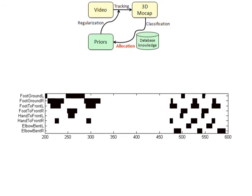The knowledge about the activities can be used to allocate priors to the tracking sequence. In this example, we show priors according to foot on ground, foot to front, hand to front, and elbow bent. The allocated priors are integrated as soft constraints to regularize the tracking in a subsequent iteration.